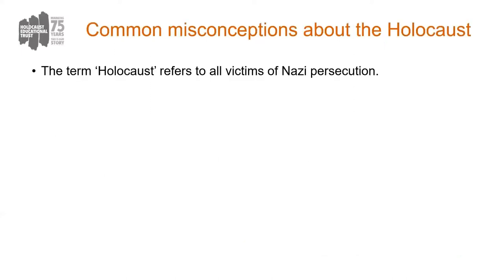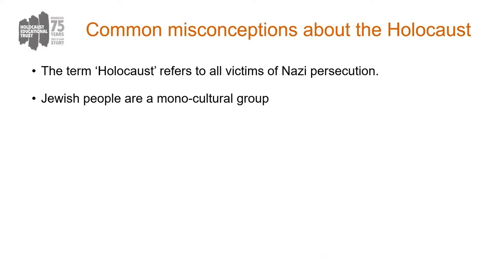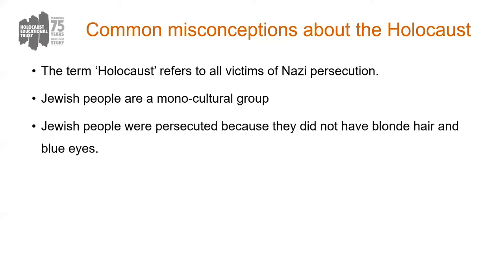On the screen now you can see some common misconceptions of the Holocaust, and we'll refer to some of these and the ways in which you can usefully challenge them throughout this session. One common one is that the term 'the Holocaust' refers to all victims of Nazi persecution. That's a misconception in the sense that when we talk about the Holocaust, we're talking specifically and exclusively about the genocide of Jewish people. Another misconception is that Jewish people are monocultural — in other words, there is very little difference between Jewish communities or individuals regardless of where in the world they live.